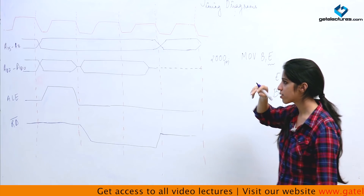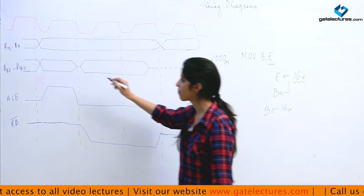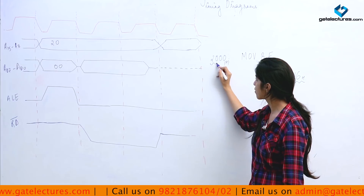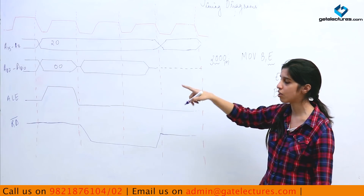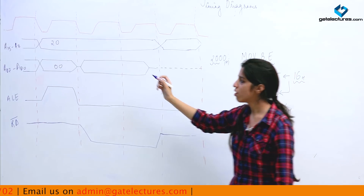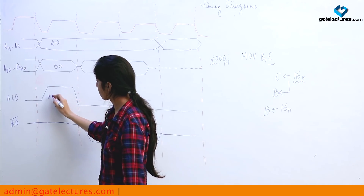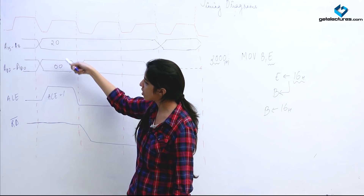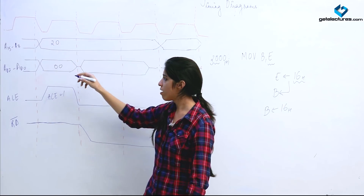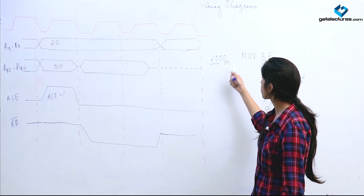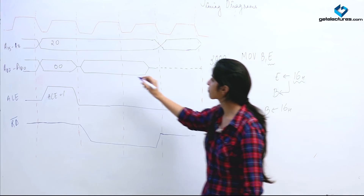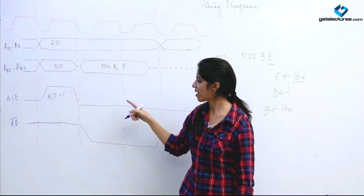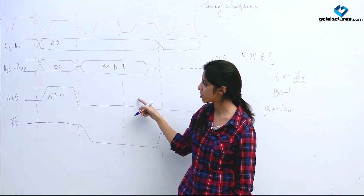We place the address 2000H on the address bus: 20H in the higher address lines and 00H in the lower lines. ALE is made 1 (Address Latch Enable), so this bus behaves as an address bus. When we reach location 2000H, we fetch the opcode for MOV B, E.